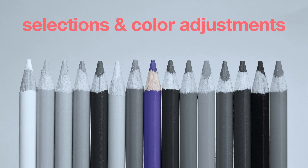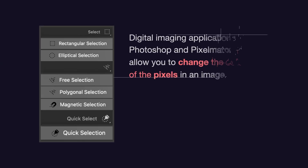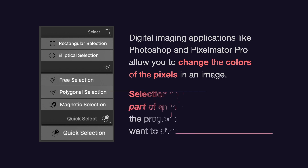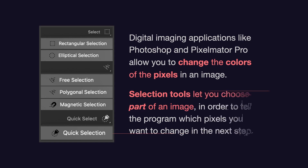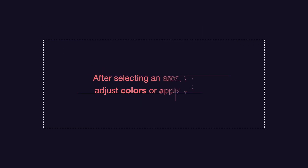Selections and color adjustments in Pixelmator Pro. Digital imaging applications like Photoshop and Pixelmator Pro allow you to change the colors of the pixels in an image. Selection tools let you choose part of an image to tell the program which pixels you want to change. After selecting an area, you can adjust colors or apply effects or gradients to that area.